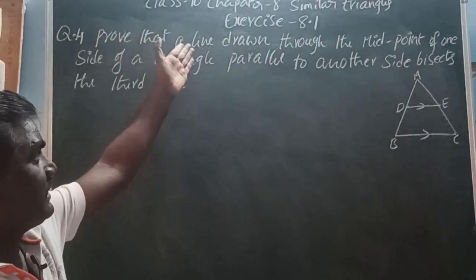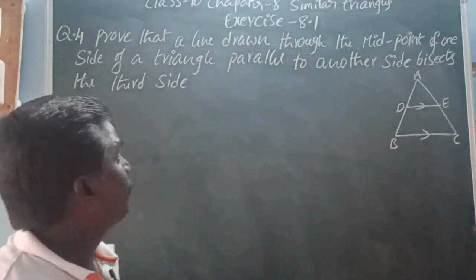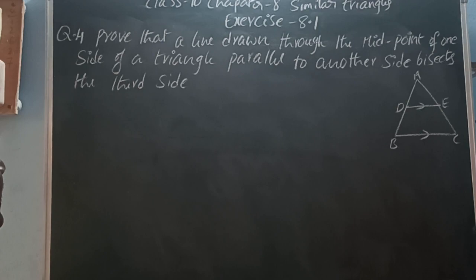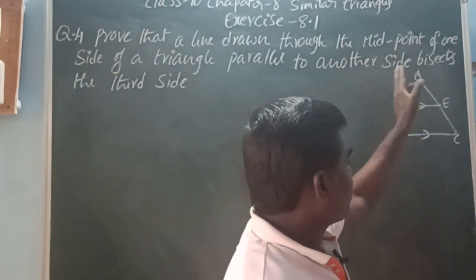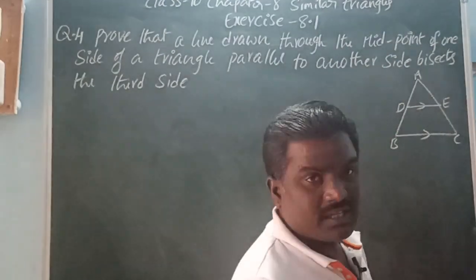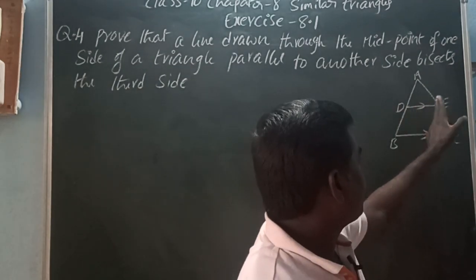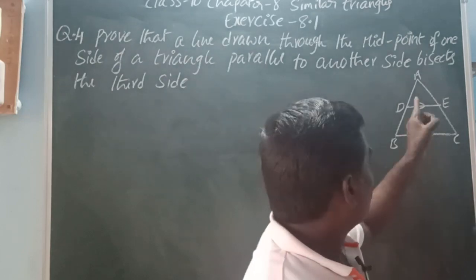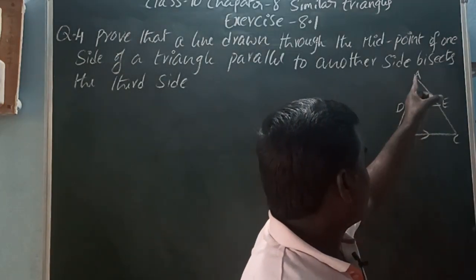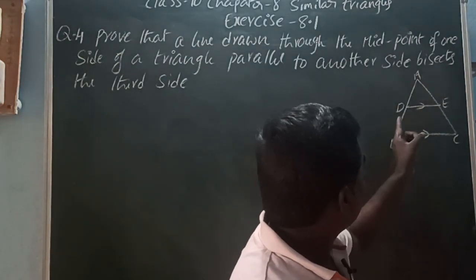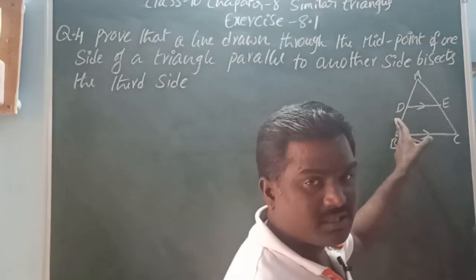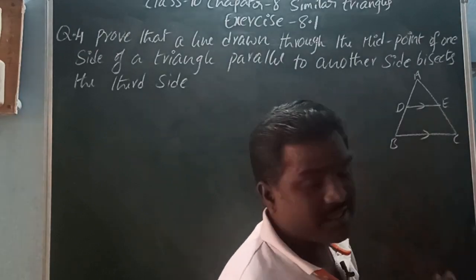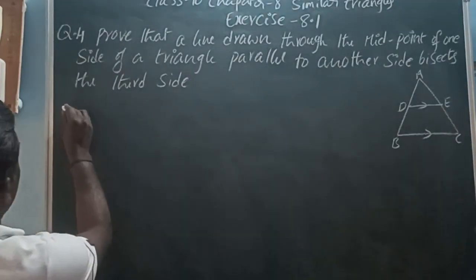Question Number 4: Prove that a line drawn through the midpoint of one side of a triangle, parallel to another side, bisects the third side. In triangle ABC, the line DE joins point D on AB and point E on AC. D is the midpoint on AB, meaning AD is equal to DB. Prove that AE is equal to EC, so E is a midpoint.